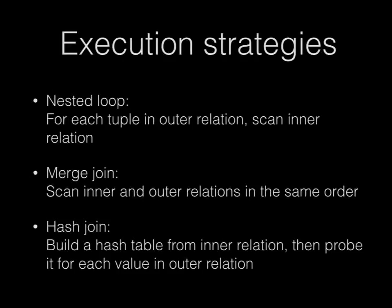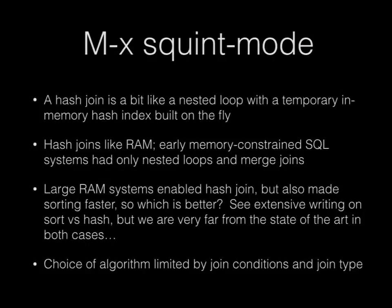There are three basic strategies for executing joins in a relational database. Nested loops fall out almost from the definition of what a join is — you walk through one relation and for each row scan the other for a match, either via a sequential scan or an index scan. Then there are merge joins, where both input relations are sorted in the same order and you walk through them in sync finding matches. And then there are hash joins, which were the last to be discovered — you build a hash table from one relation and walk through the other, probing the hash table to find matches. A hash join is a bit like a nested loop with an in-memory index that you build on the fly for the inner relation.